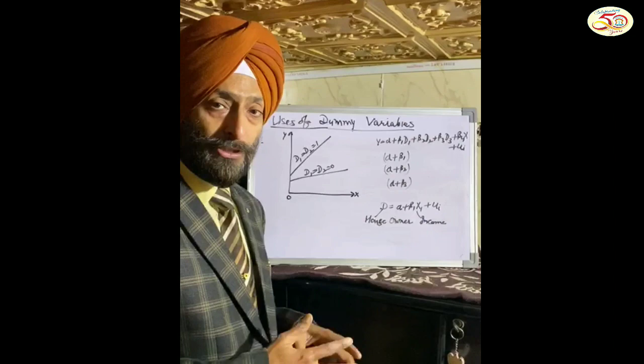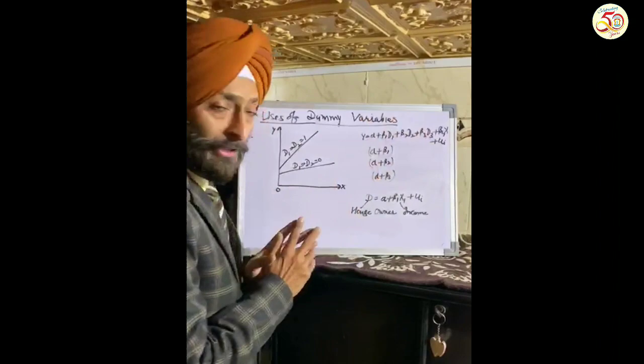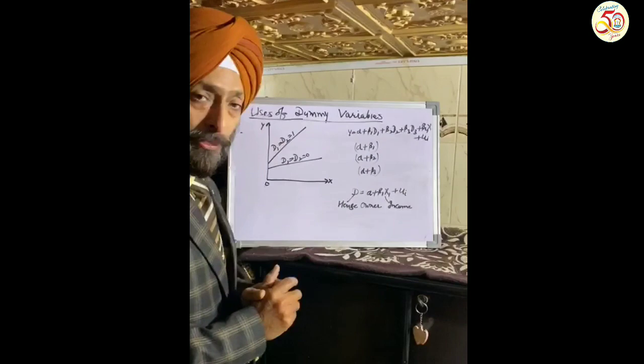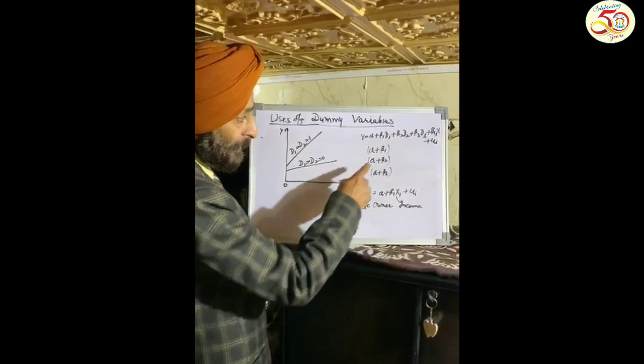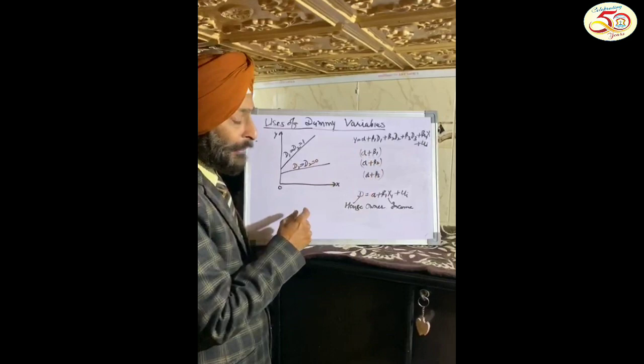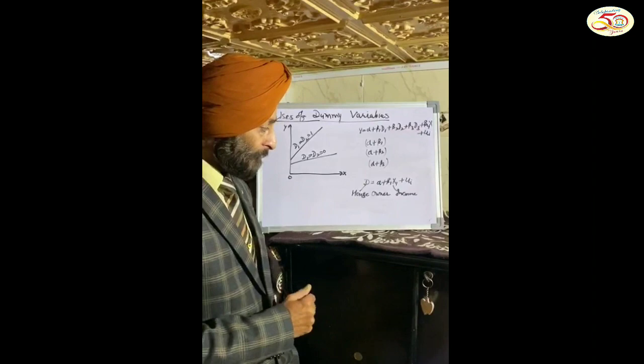Another use of dummy variable is to show seasonal changes. Due to change in season, if we consider three quarters in a year — Q1, Q2, and Q3 — we introduce three dummy variables: D1 for the first quarter, D2 for the second quarter, and D3 for the third quarter. Assigning value 1 to D1 gives one intercept; assigning 1 to D2 gives intercept α + β₂; and assigning 1 to D3 gives yet another intercept. So seasonal changes can also be interpreted with the help of dummy variables.